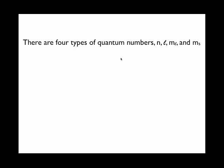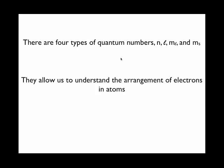So there are four types of quantum numbers: n, L, M sub L, and M sub S. Together they allow us to understand how the electrons are arranged in atoms, and they allow us to understand why the periodic table is arranged the way it is.